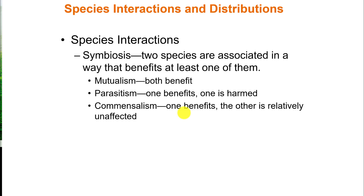Symbiosis is where two species are associated in a way that benefits at least one of them. There are three kinds: with mutualism, both organisms benefit. An example is a coral reef — the coral gets nutrients from zooxanthellae and plant organisms living inside it, and those plant organisms get somewhere to live. With parasitism, one organism benefits and the other is harmed. Most of us are familiar with worms in pets; in parasitism, there's no benefit to the host but great benefit to the parasite, which gets nutrients from its host.